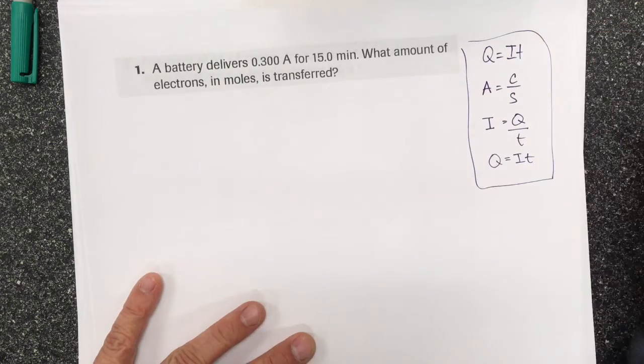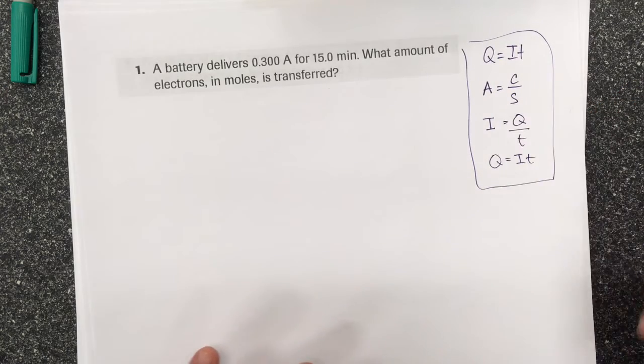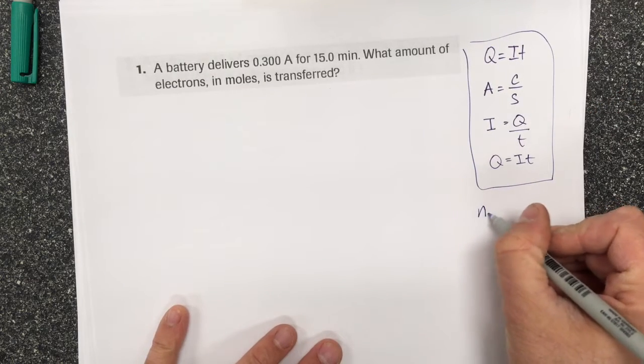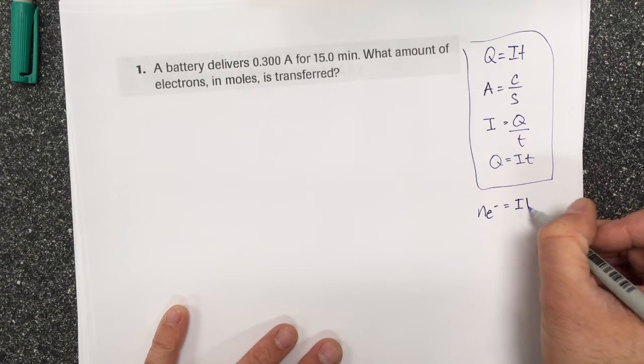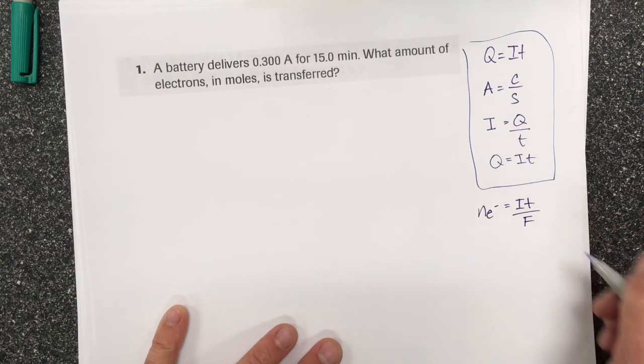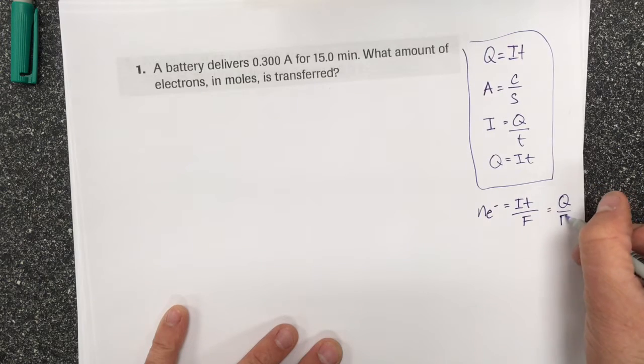Well this is going to get used to find the amount of charge. The number of moles of electrons is equal to current times time divided by Faraday's constant, or it's equal to coulombs divided by Faraday's constant.